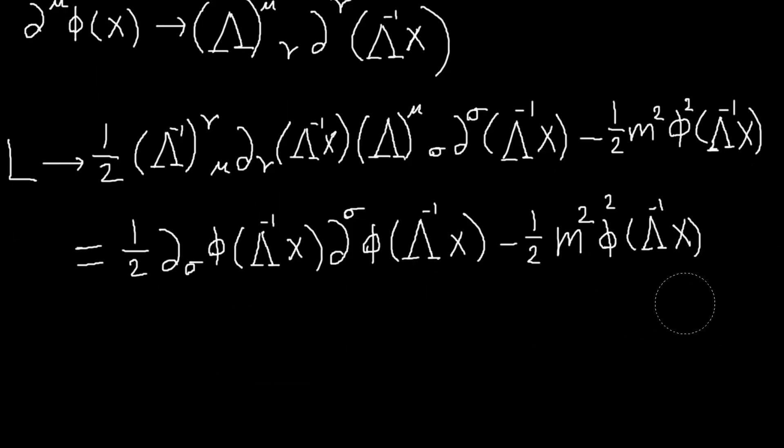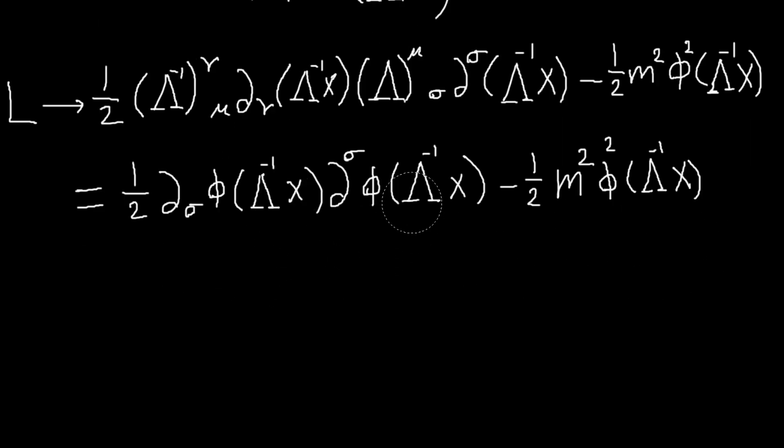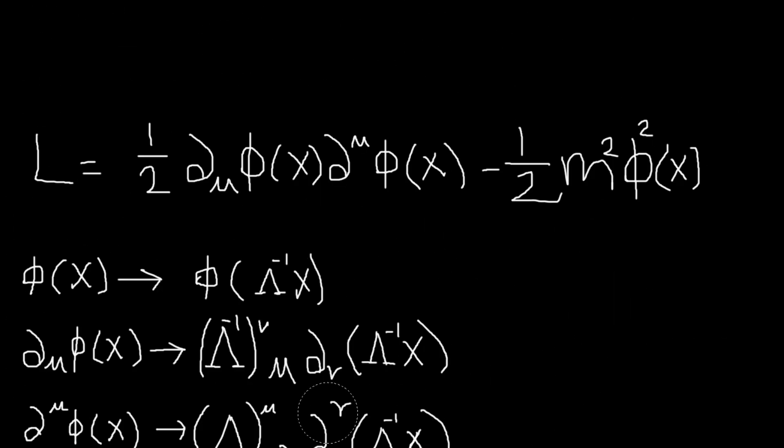And of course, if we find the equations of motion for phi here, we will of course get—this is still the Klein-Gordon Lagrangian, so we'll just get the Klein-Gordon equation, and now our field phi of lambda inverse times x will satisfy the Klein-Gordon equation. So there you go.